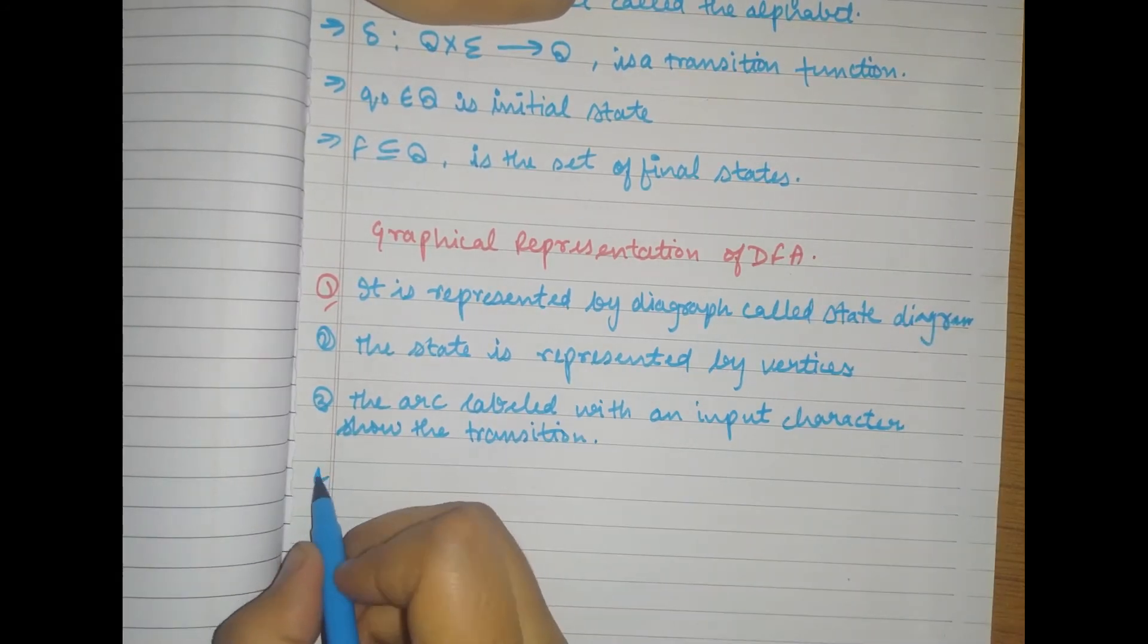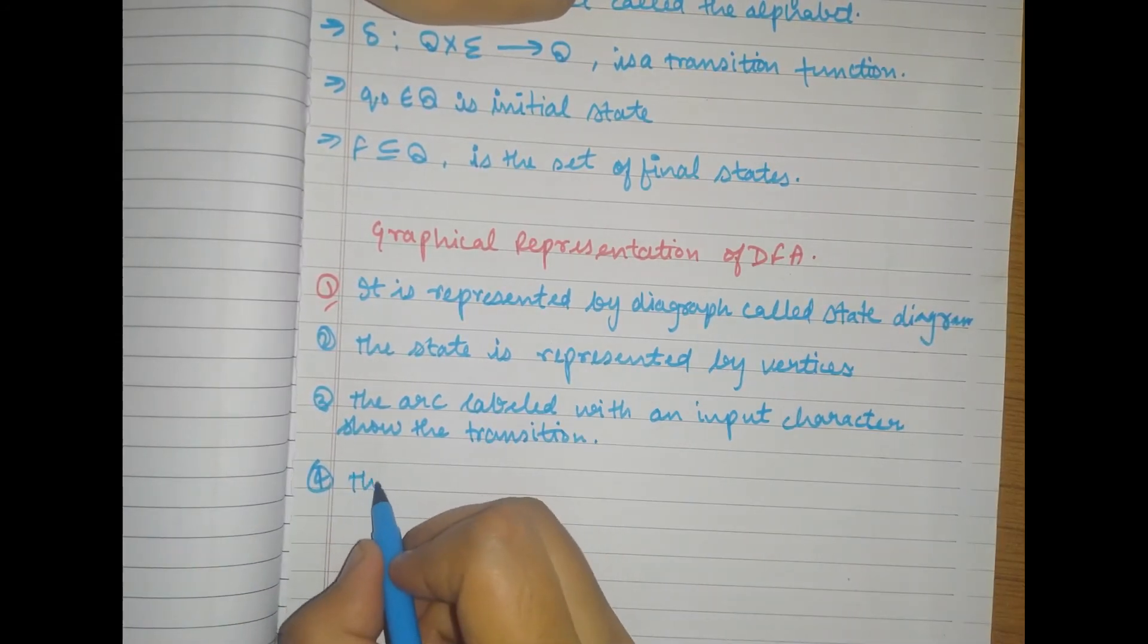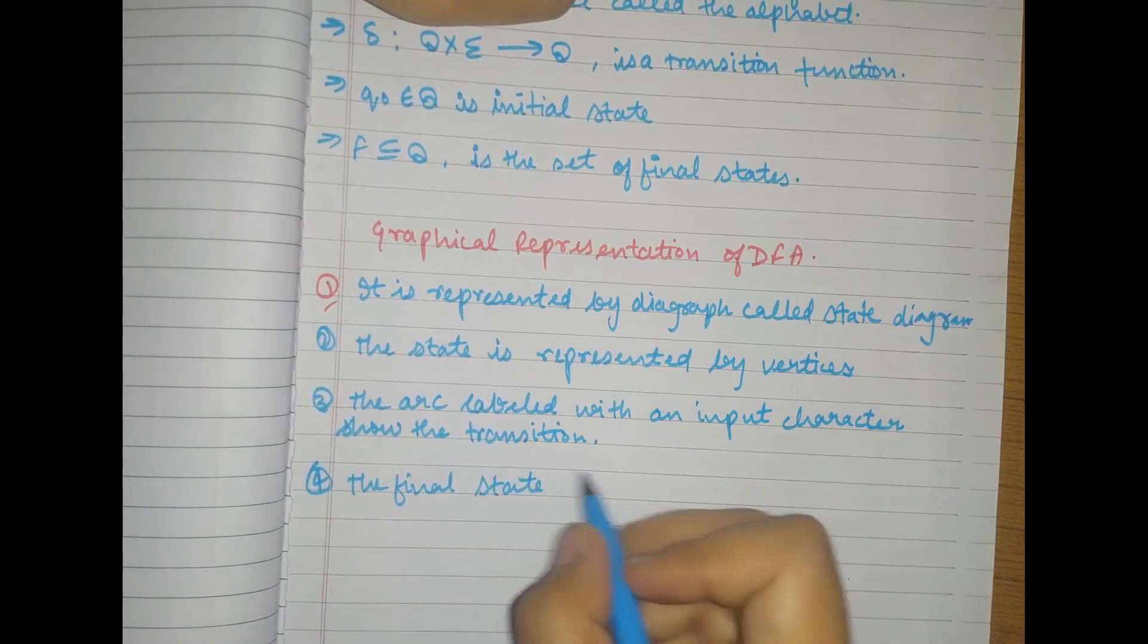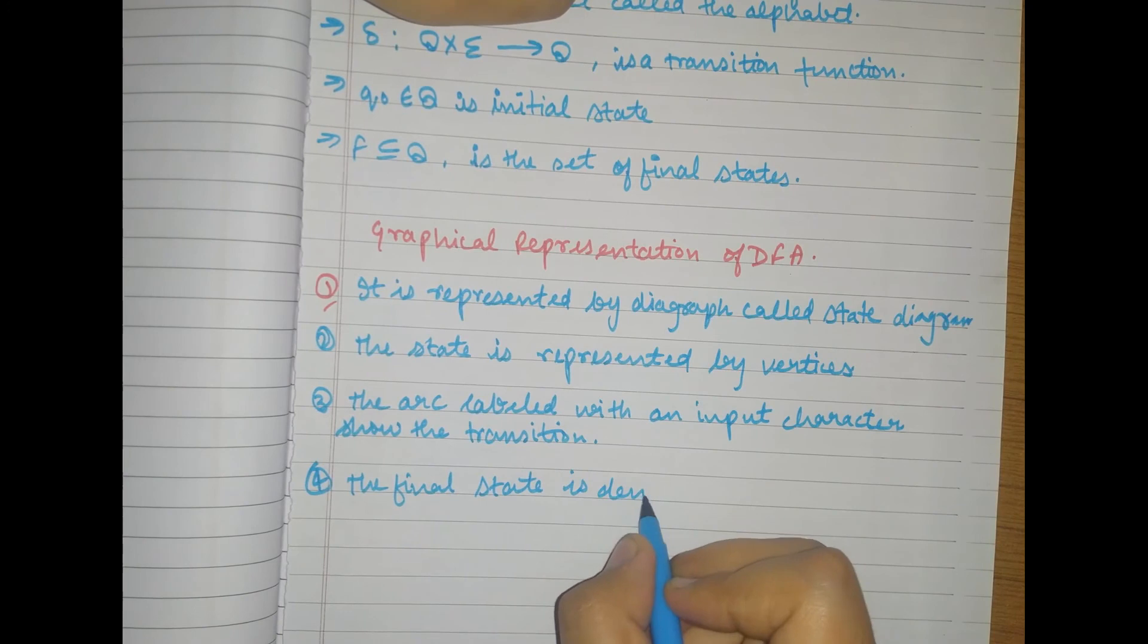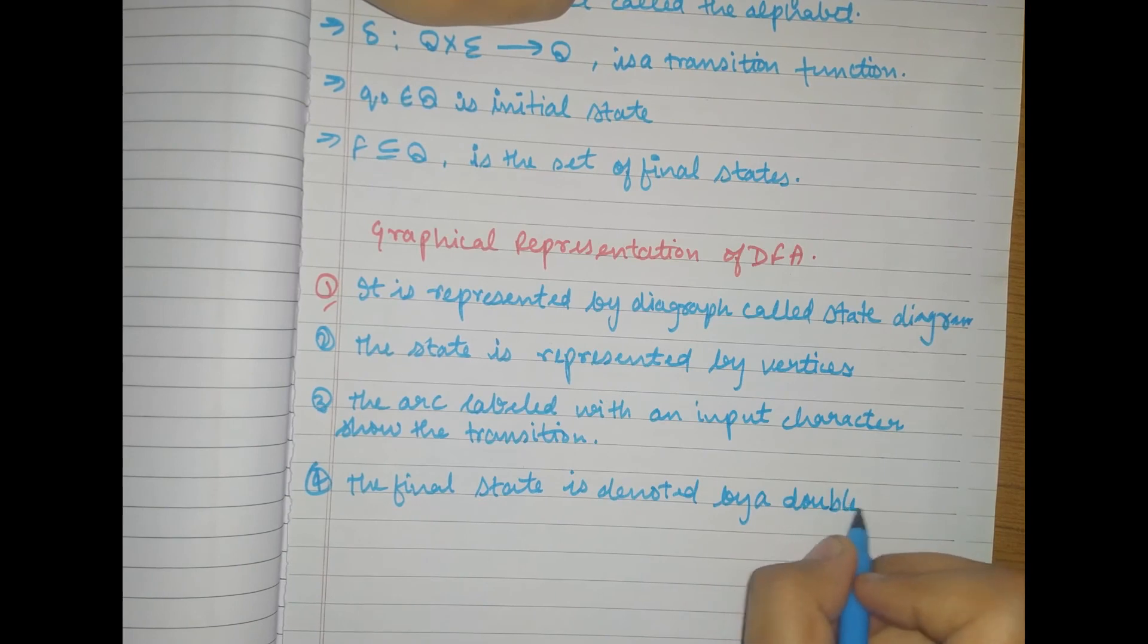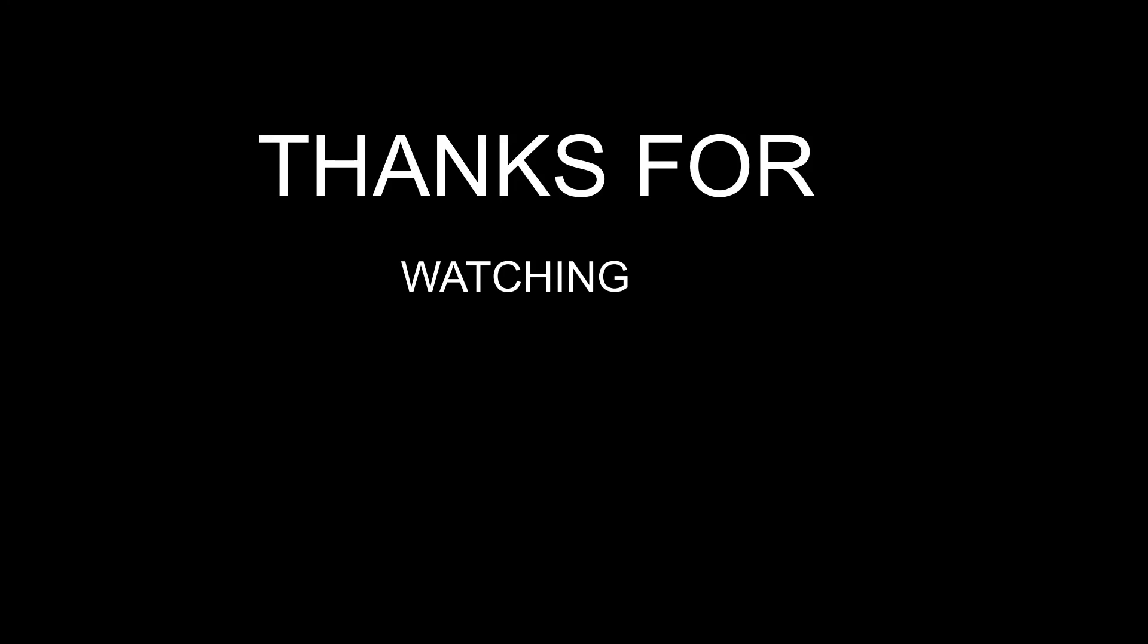Okay, so the fourth and last point is, the final state is denoted by a double circle as we all know.